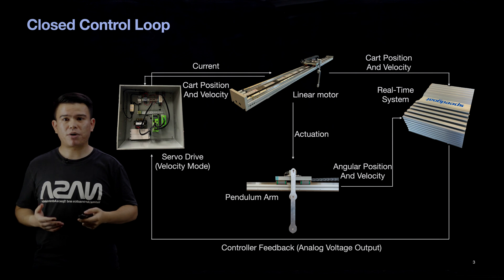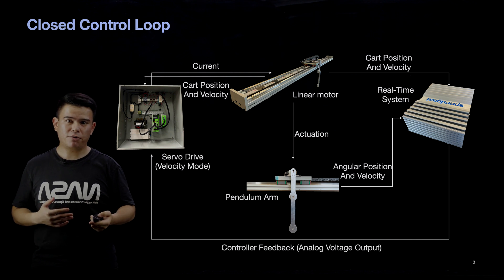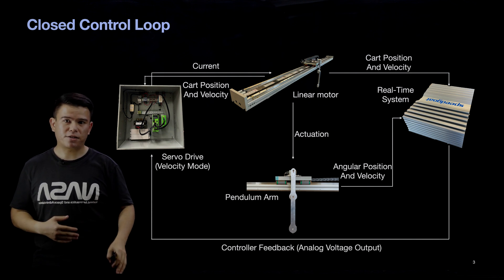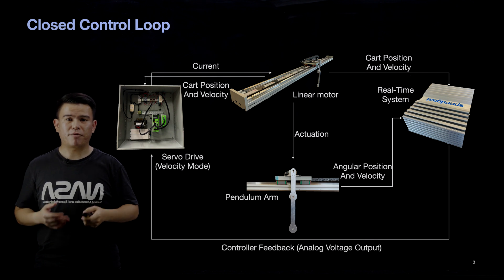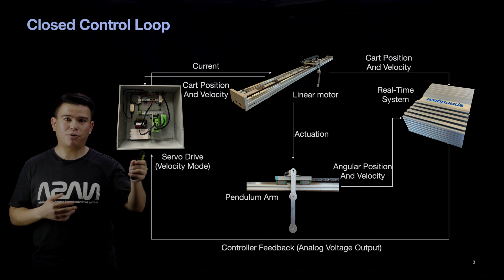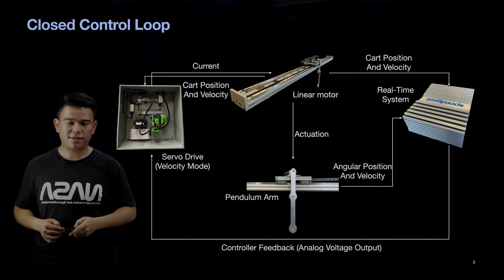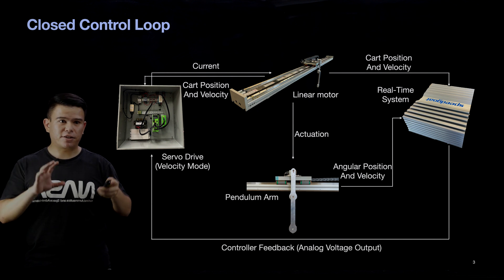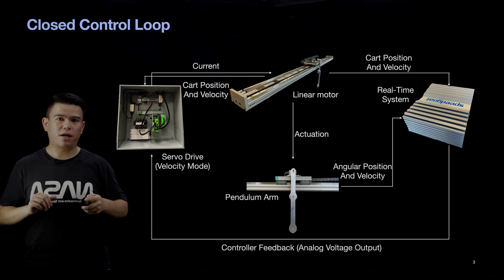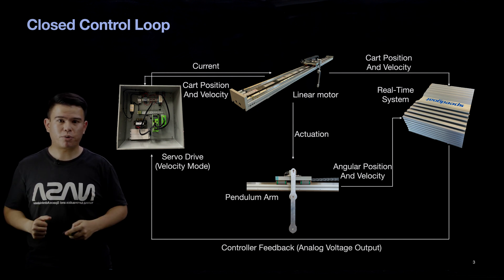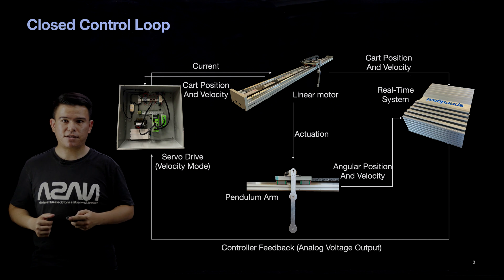It then sends that desired speed information using an analog signal to the servo drive. The servo drive compares the current speed of the linear motor with the desired speed to determine whether to increase or decrease its velocity. That's the entire control diagram we're using in the system.